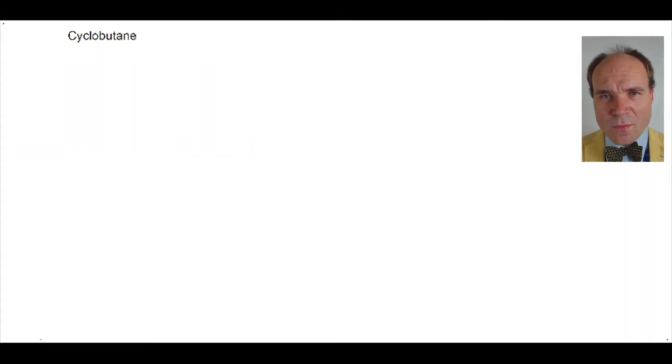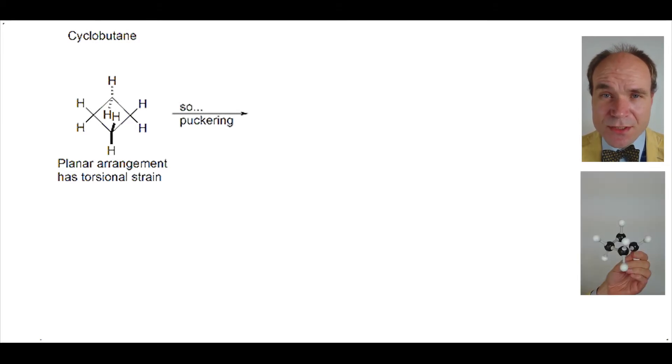Let's think about four-membered rings such as cyclobutane. Here it's depicted in a planar arrangement—it's basically flat. We have eclipsing interactions and therefore significant torsional strain, but the molecule can move and puckers itself to reduce some of this torsional strain.